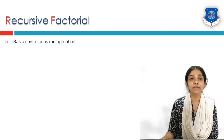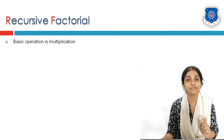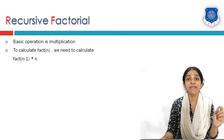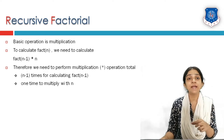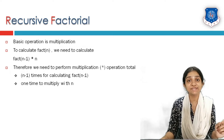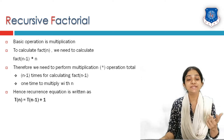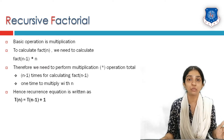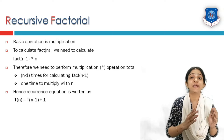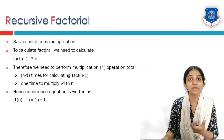This recursive factorial has only one basic operation: multiplication, which is inside the return statement. To calculate factorial of n, we need to call factorial of n minus 1 and multiply the result with n. The multiplication operation would be called n minus 1 times for factorial of n, plus one more time to multiply its result with n. So this gives us T(n) = T(n-1) + 1. This is our recurrence relation.